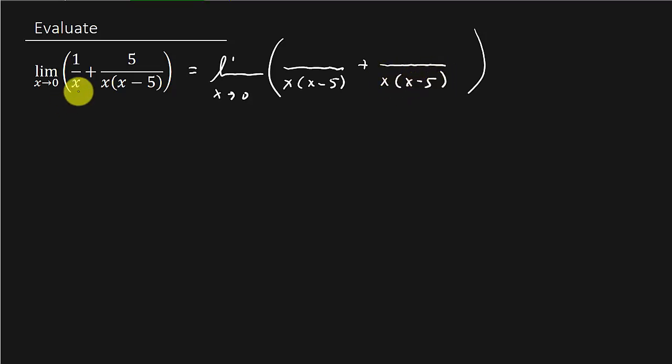Alright, so we can see here, we've got to multiply x minus 5 to this x to get the common denominator, so we've got to multiply it to the numerator. So 1 times x minus 5 is x minus 5. Well, this is the common denominator, so that'll just stay at 5.